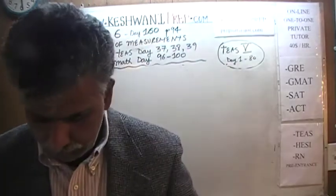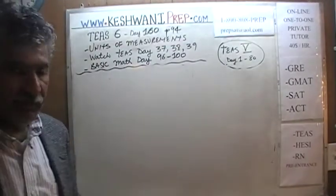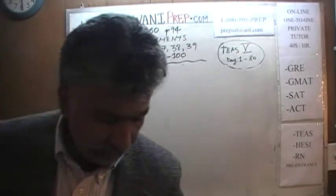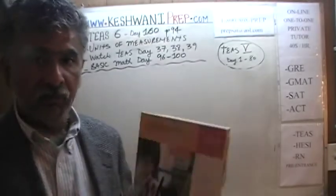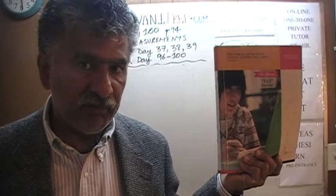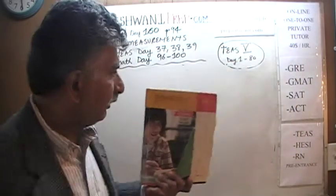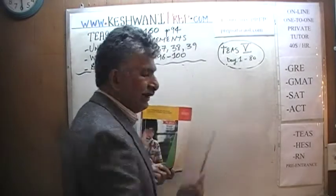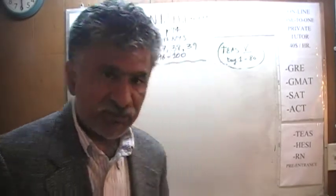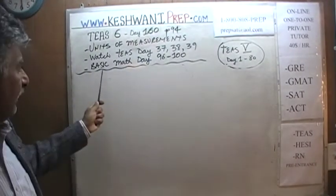Today is lesson number 160. We're dealing with the concept of units of measurements. The same concept was covered in the previous fifth edition of the book. If you're interested in more practice, we have solved every single problem from the fifth edition — solutions from day number 1 through 80. This topic, units of measurement, is found on days 37, 38, and 39.